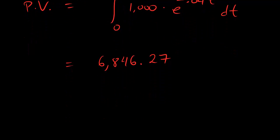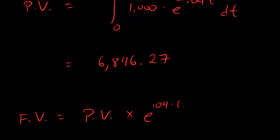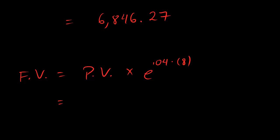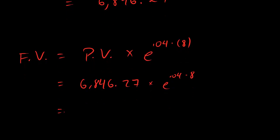We don't care about the present value — the question is what is the future value? The future value is just present value times E to the RM. So our future value is $6,846.27 times E to the 0.04 times 8. If you calculate that, you should get something like $9,428.19. That's your answer.